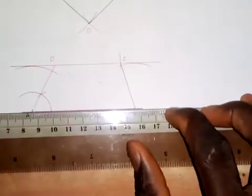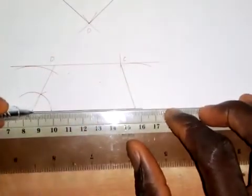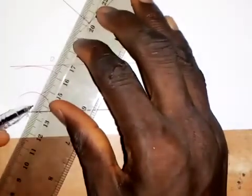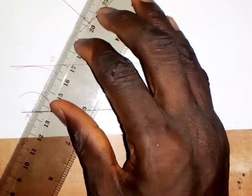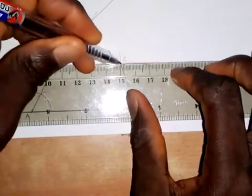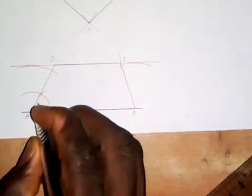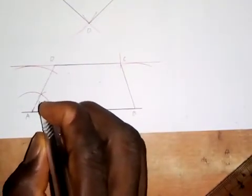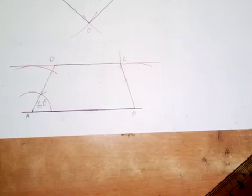Then I'll make AB a tick line, AD a tick line, and CD a tick line. This angle here is 60 degrees. So this is how to construct a trapezium where you are given the length of the two parallel sides, the included angle, and the height. Thank you, and keep on practicing.